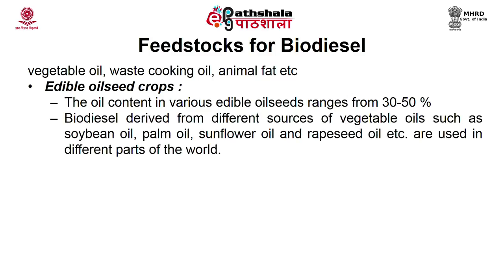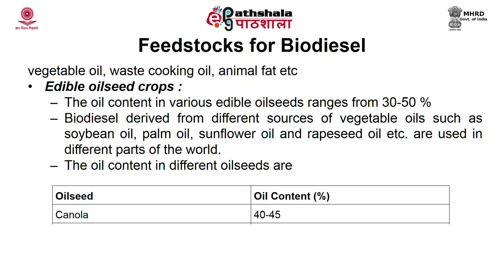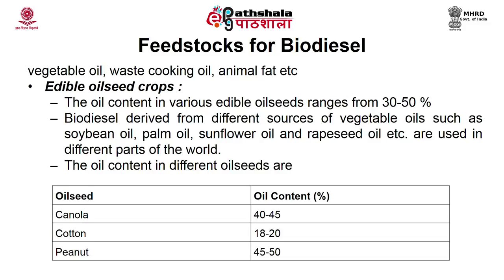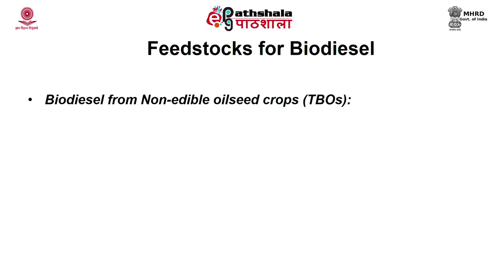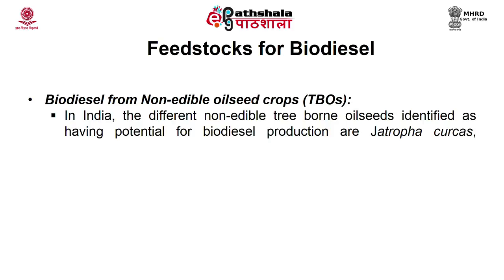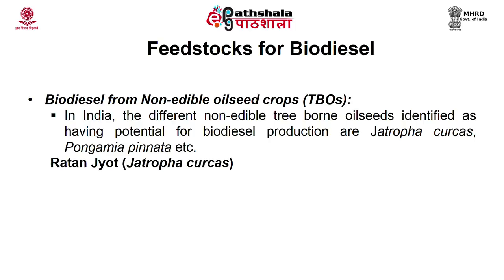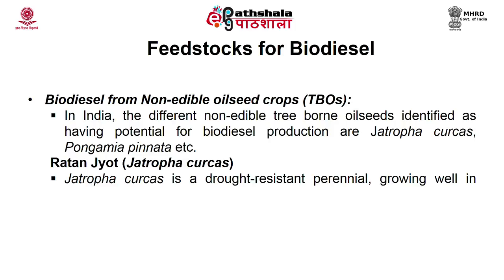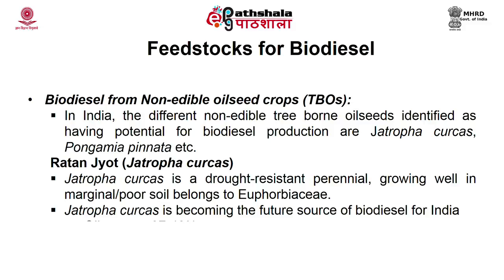Biodiesel derived from vegetable oils sparks a debate between food versus fuel. The other feedstock is non-edible oil seed crops, commonly known as TBOs — tree-borne oil seeds. The major one worldwide is Jatropha curcas, commonly known as Ratanjot, a drought-resistant perennial shrub that grows in different soil types, belonging to the family Euphorbiaceae, with an oil content of 37 to 40%.